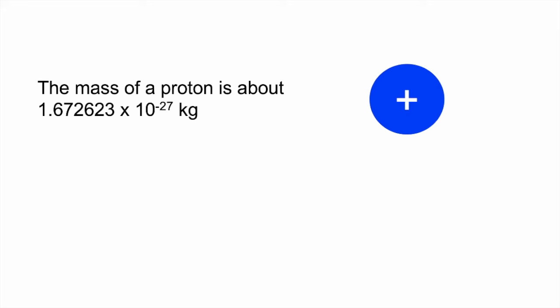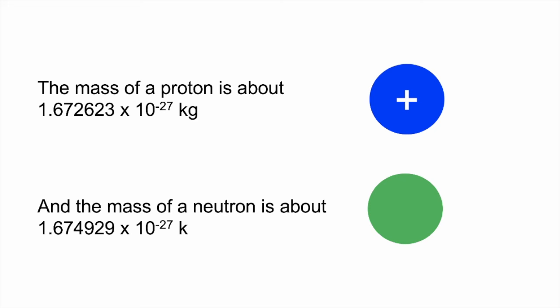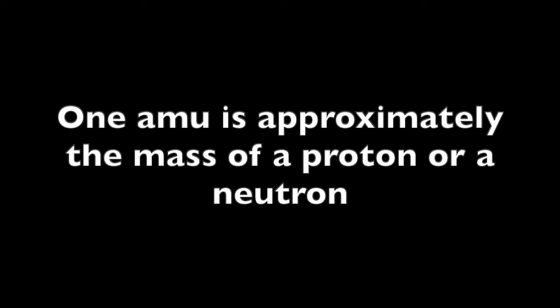This is the mass of a proton, and this is the mass of a neutron. These numbers are very awkward to use because of the exponents. Fortunately, chemists use a different unit of measurement called the atomic mass unit. One atomic mass unit, or one AMU, is approximately the mass of a proton or a neutron.